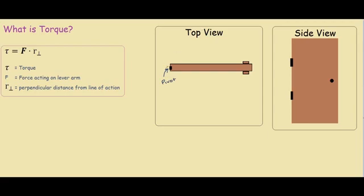So this is the top view and we can think of the door as a lever arm. We have a force when we try and open the door. So this is F, the applied force. And we're also interested in the perpendicular distance from the force to the pivot point, so that would be this line over here. And we call this R, R perpendicular.